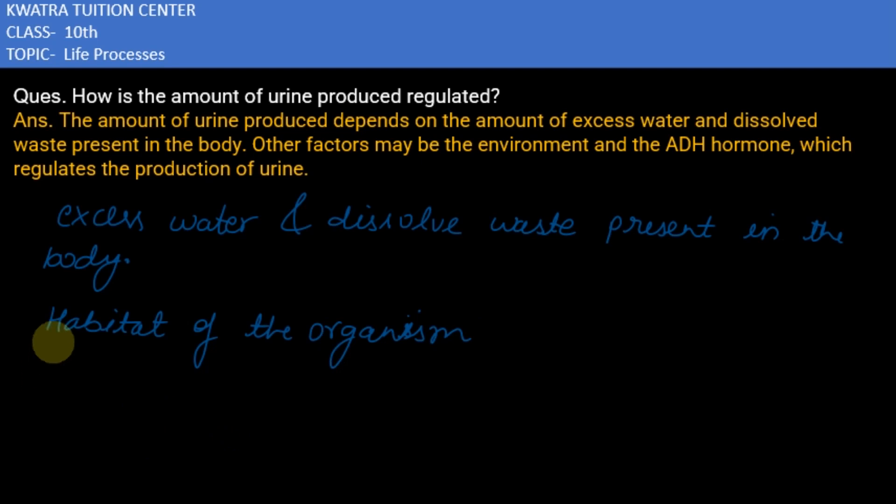And there is a hormone which regulates the production of urine and it is known as ADH hormone, the antidiuretic hormone.